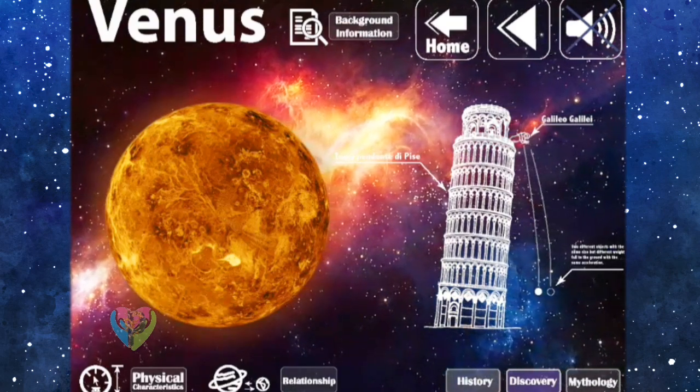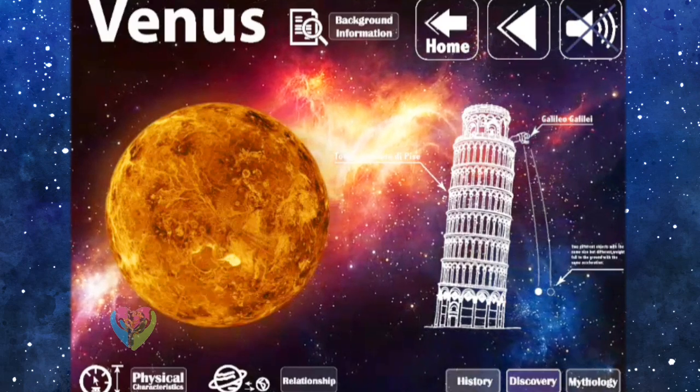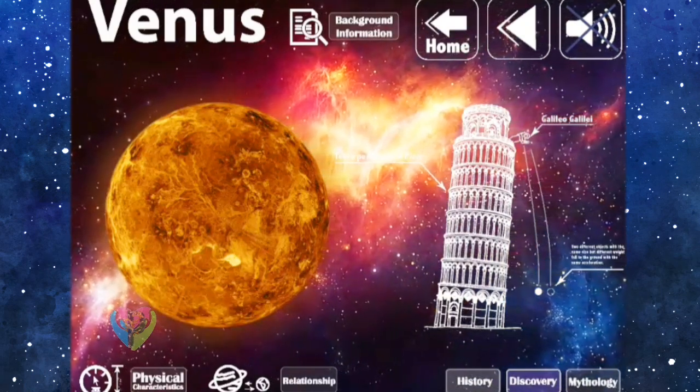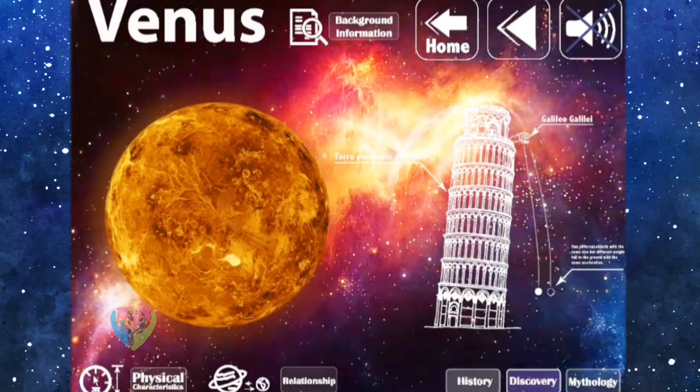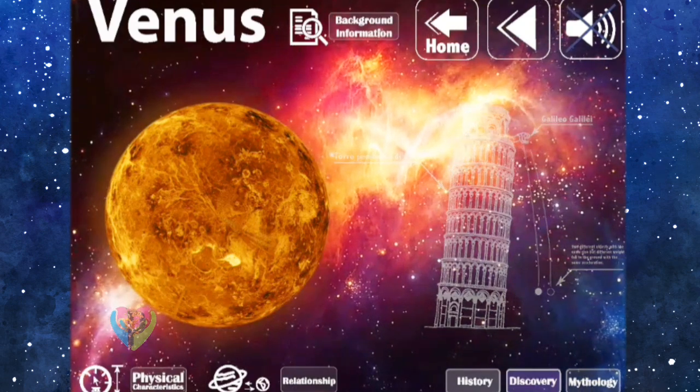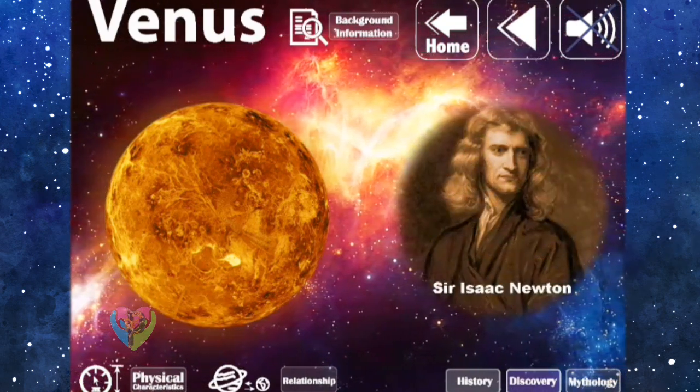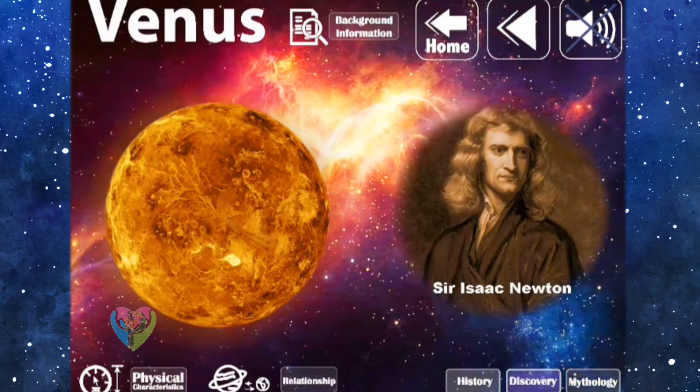However, Galileo thought differently. He believed that the object falls to the ground is not just a natural place but because there is the force between two objects. Galileo conducted the experiments at the Leaning Tower of Pisa proving that all objects fall to the earth with the same acceleration. This concept was later developed by Sir Isaac Newton, a British mathematician.